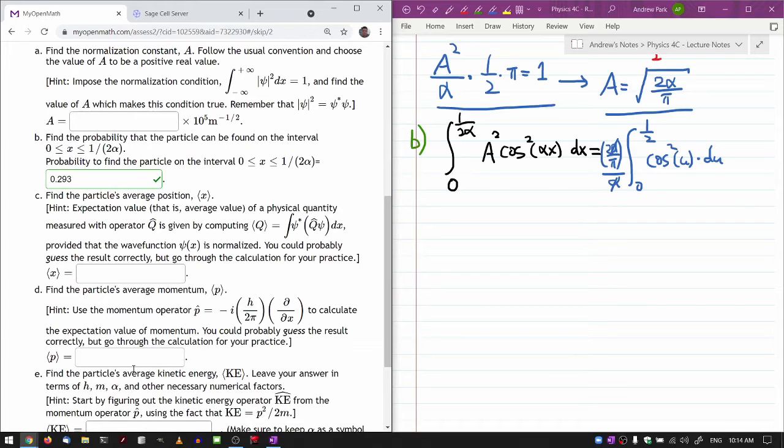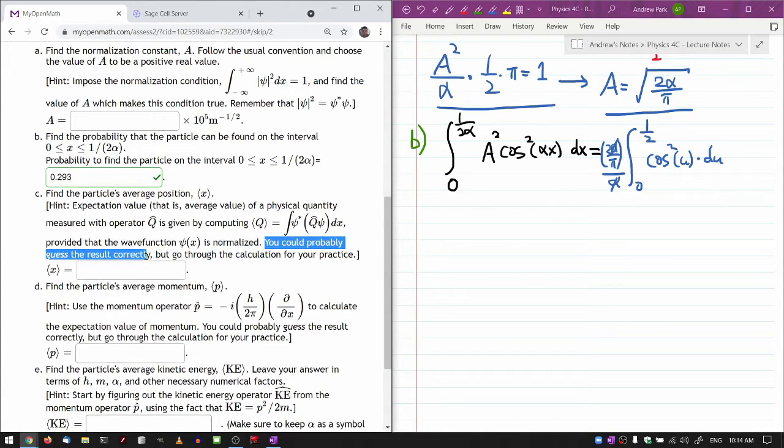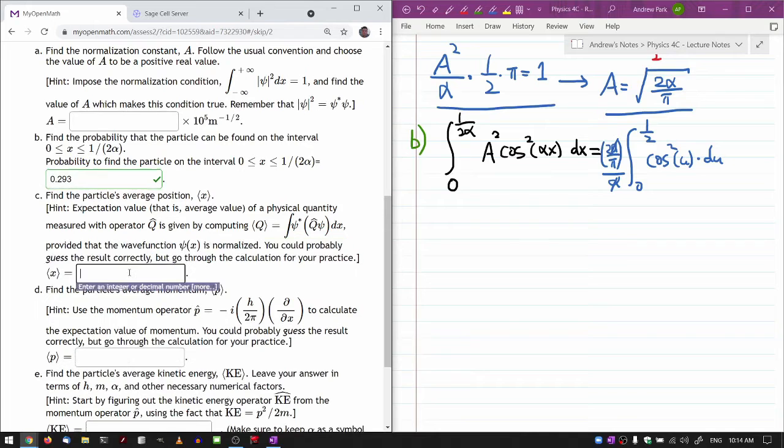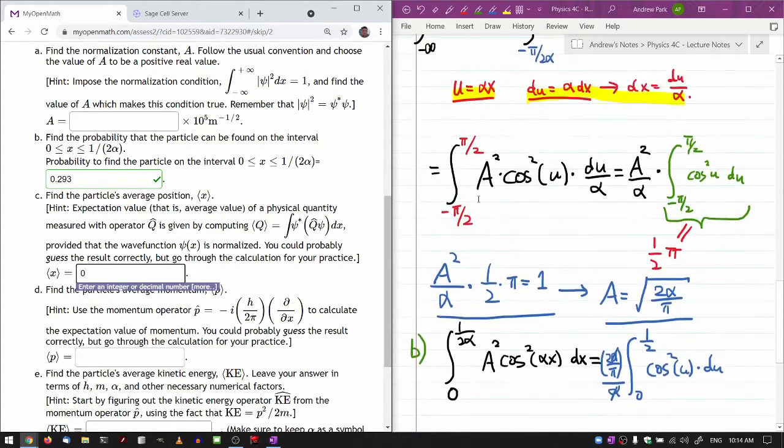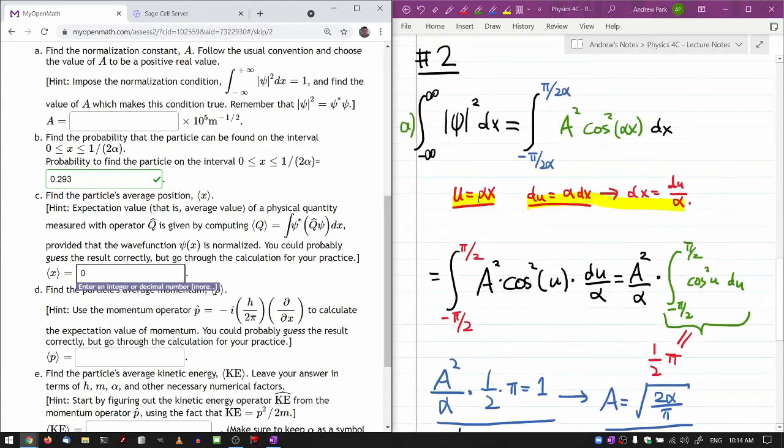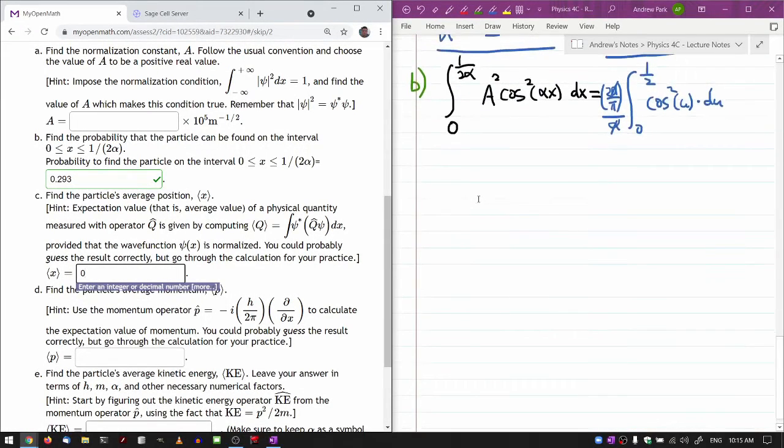It asks, find the particle's average position. Oh yeah, you could have probably guessed the result correctly. And this is what I mean. The answer, when you go through the whole thing, it's going to end up being 0. Because how would you, so I mean, I'm relying on my intuition here. Here's one way you can figure out the answer must be 0.